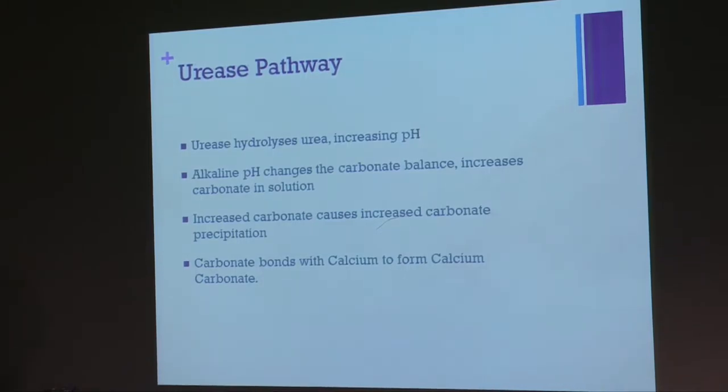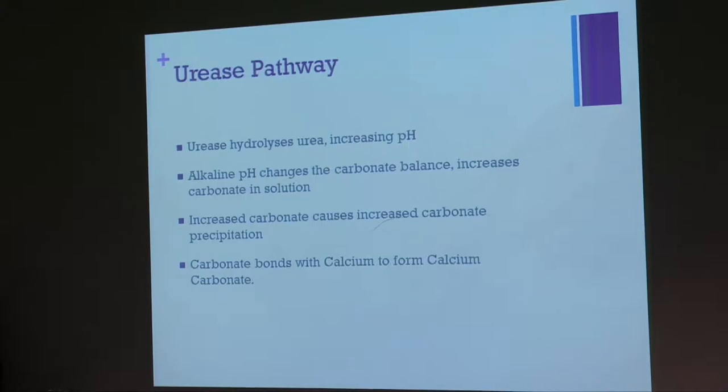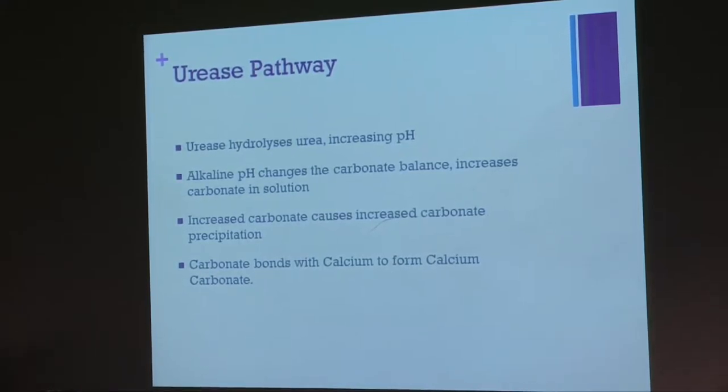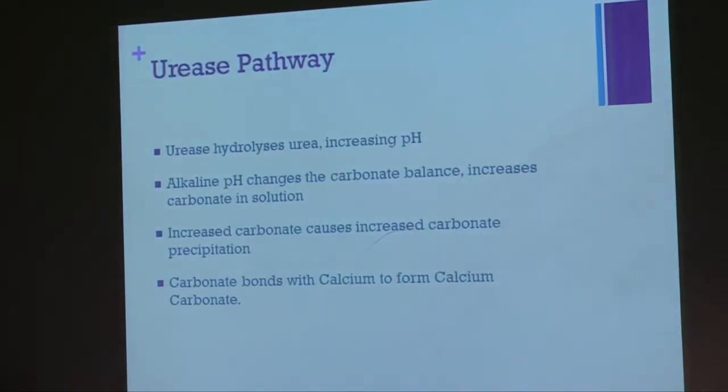The one pathway we decided to investigate was the urease pathway. In this, you add urea to a sample of urease-positive bacteria. This causes the pH to rise, which causes more carbon dioxide to be dissolved into solution — so effectively it cleans carbon dioxide from the air. This increased carbonate concentration causes the carbonate to be more susceptible to precipitating out when you add an electrochemically favourable thing such as calcium. So if you add calcium to something that has a really high carbonate concentration in an alkaline media, it will just cause crystals of calcium carbonate to form.